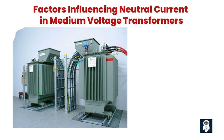2. Harmonic distortion and its impact on neutral current. Harmonic distortion refers to the presence of unwanted frequencies in the electrical system. Non-linear loads such as computers, variable speed drives, and lighting systems can introduce harmonic currents. These harmonic currents can cause increased neutral current and voltage distortion, impacting the performance of the transformer.